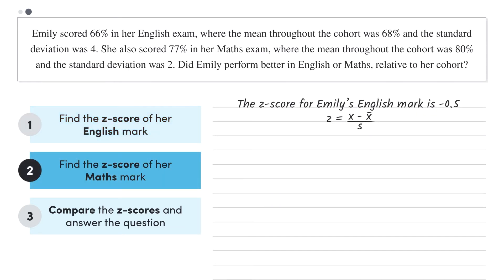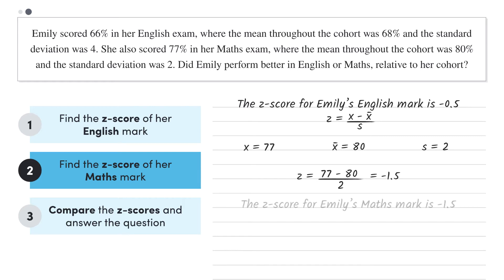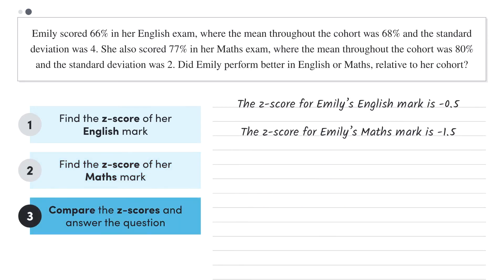Let's do the same for her maths score. Her score was 77, so X equals 77. The mean, X-bar, was 80, and the standard deviation, S, was 2. So we get the Z-score, which equals negative 1.5. In other words, Emily's maths score was 1.5 standard deviations below the mean. Comparing the two Z-scores, Emily's maths score was further below the mean when expressed in terms of standard deviations, since it had a lower Z-score. So we can say that she performed worse in maths relative to the cohort.